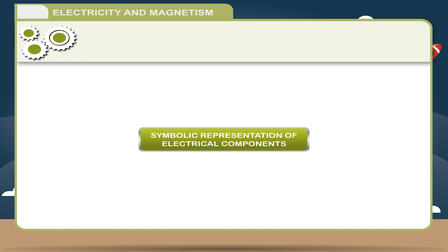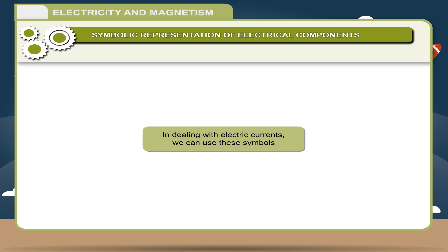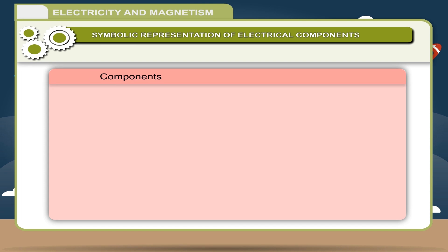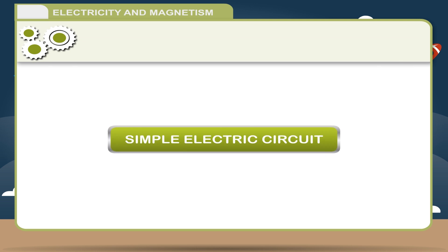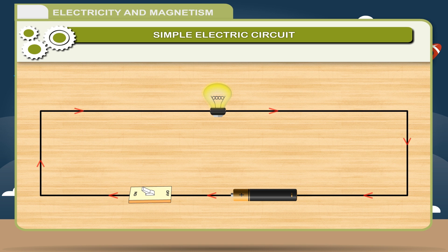Symbolic representation of electrical components. In dealing with electric currents we can use these symbols: Components and Symbols: 1. Electric cell 2. Battery of two cells 3. Electric bulb 4. Key or closed switch 5. Open switch 6. Connecting wire 7. Ammeter 8. Voltmeter 9. Resistance.